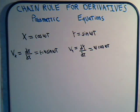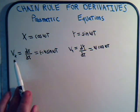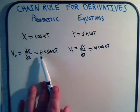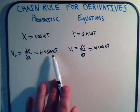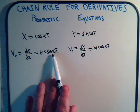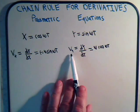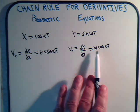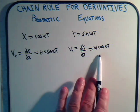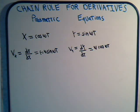Now if we wanted to, we could rewrite these equations saying vx equals minus ω times y, or we could say vy is equal to ω times x. We can go that way if we want to.